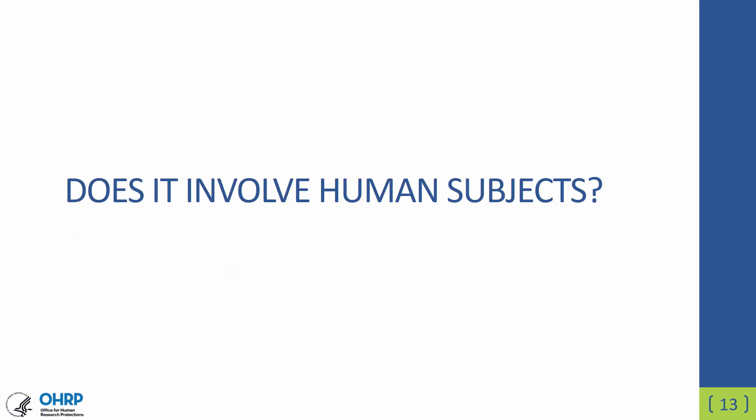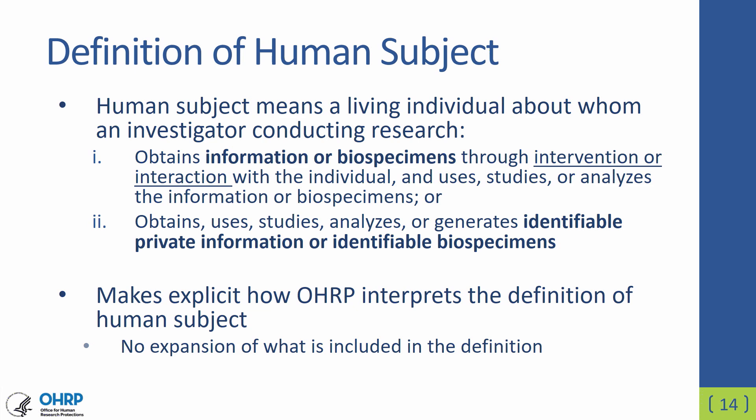The next question to ask, if you've determined that your activity meets the definition of research, is: does it involve human subjects? The regulatory definition of human subjects remains substantively unchanged in the revised Common Rule; however, clarifications to the wording make explicit OHRP's interpretation of this definition. A human subject means a living individual about whom an investigator conducting research either obtains information or biospecimens through an intervention or interaction with the individual and then uses, studies, or analyzes that information or biospecimen as part of the research; or the investigator obtains, uses, studies, analyzes, or generates identifiable private information or identifiable biospecimens through the course of the research.